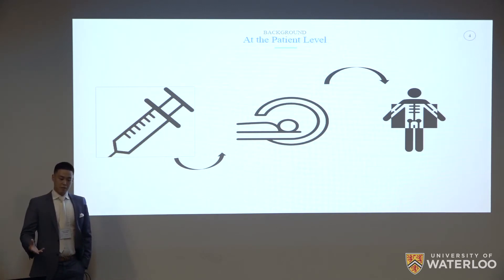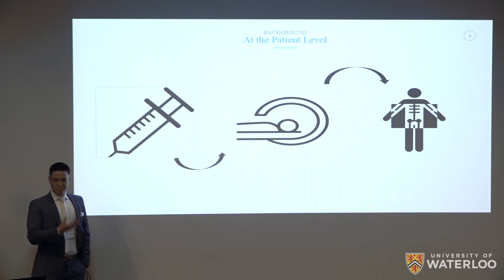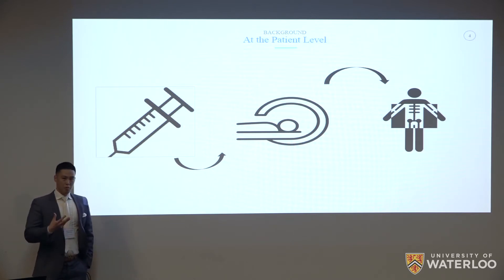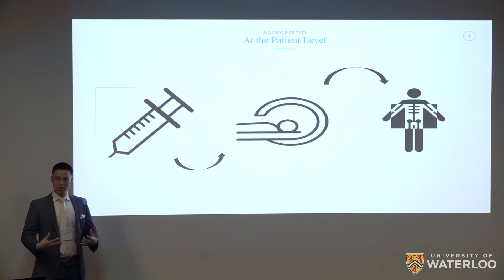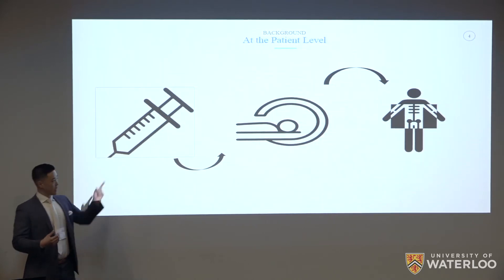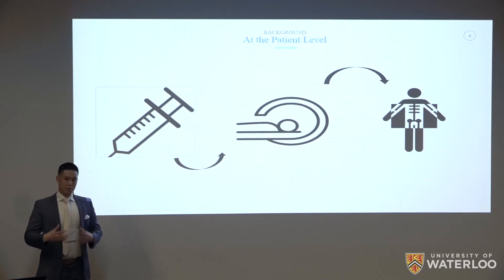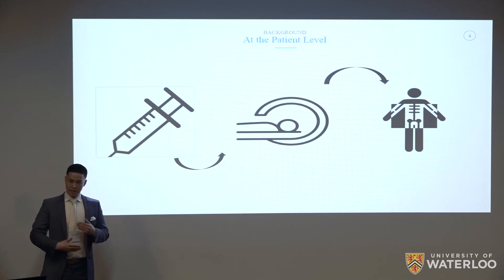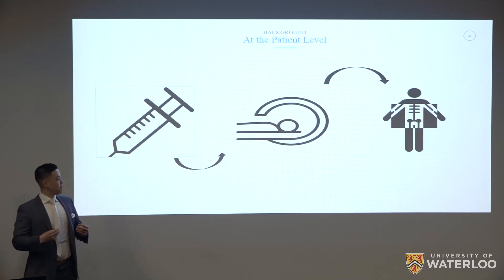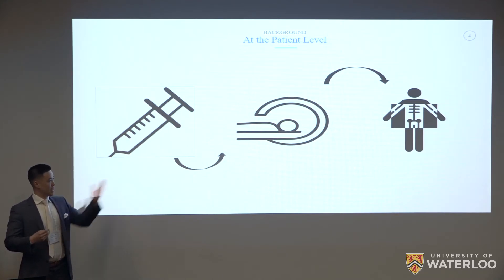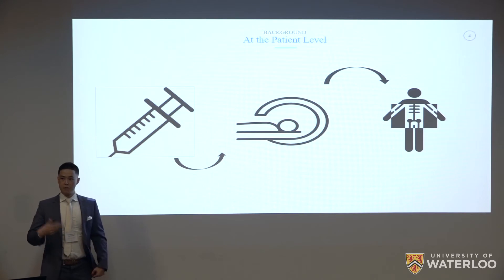For fluorescence-based medical imaging at the patient level: you want to look inside a patient in a non-invasive manner, so you'd inject biomolecular tags and markers that fluoresce through the skin. An external detector picks up on those fluorescent signals and produces an image that ultimately allows the physician to view the inner anatomy of the patient.